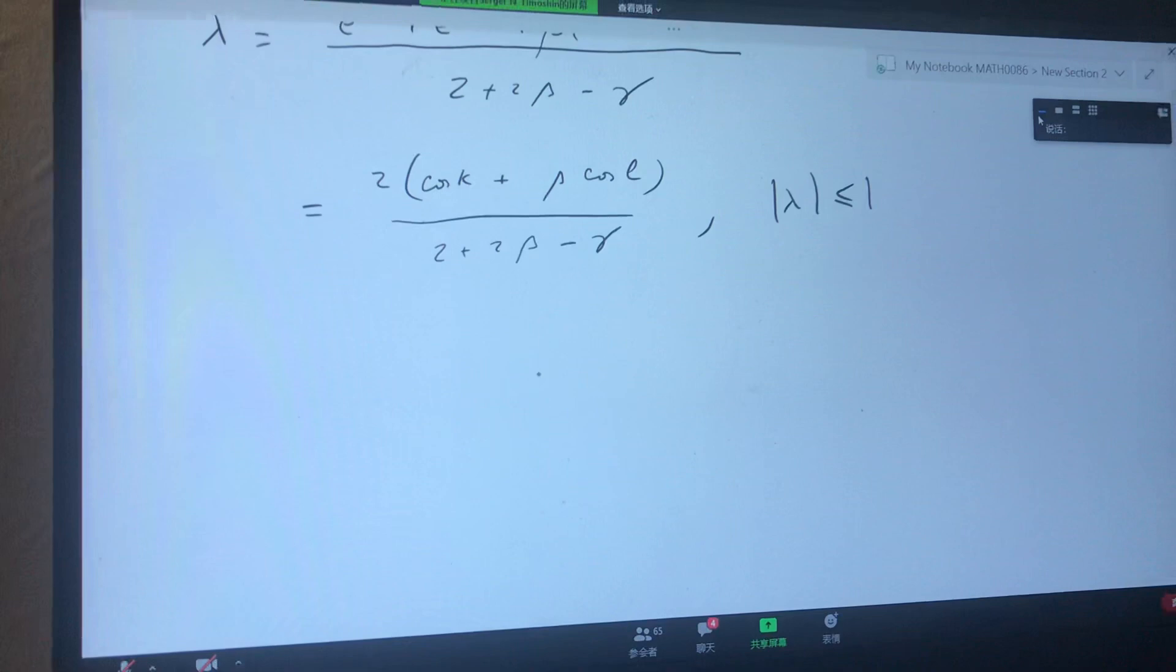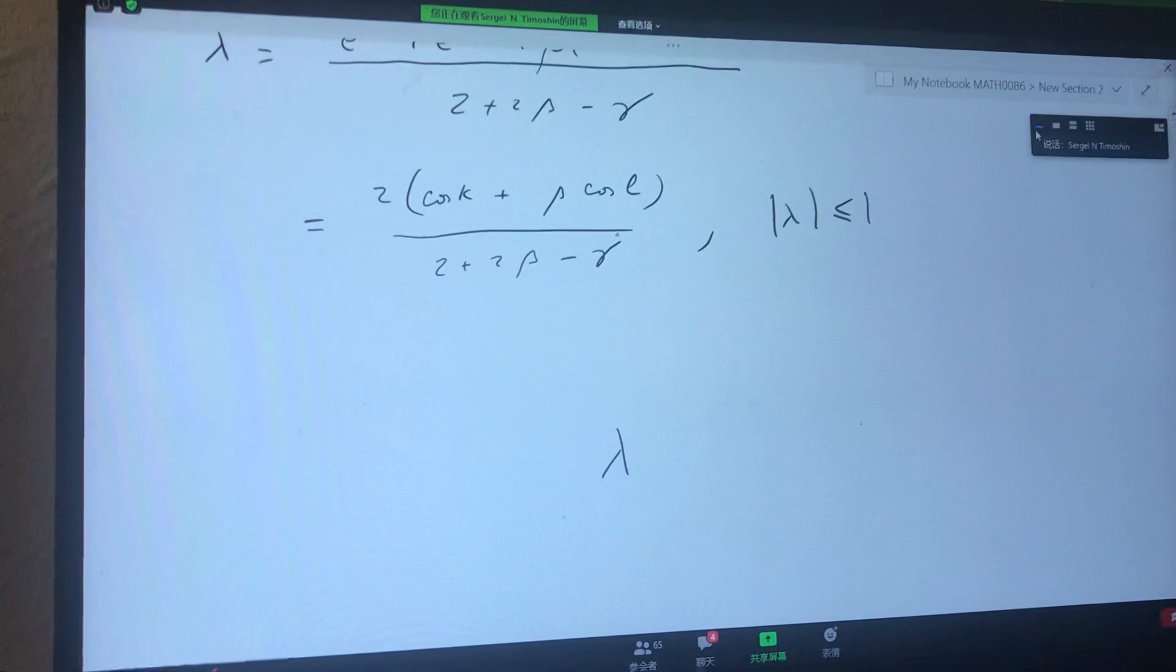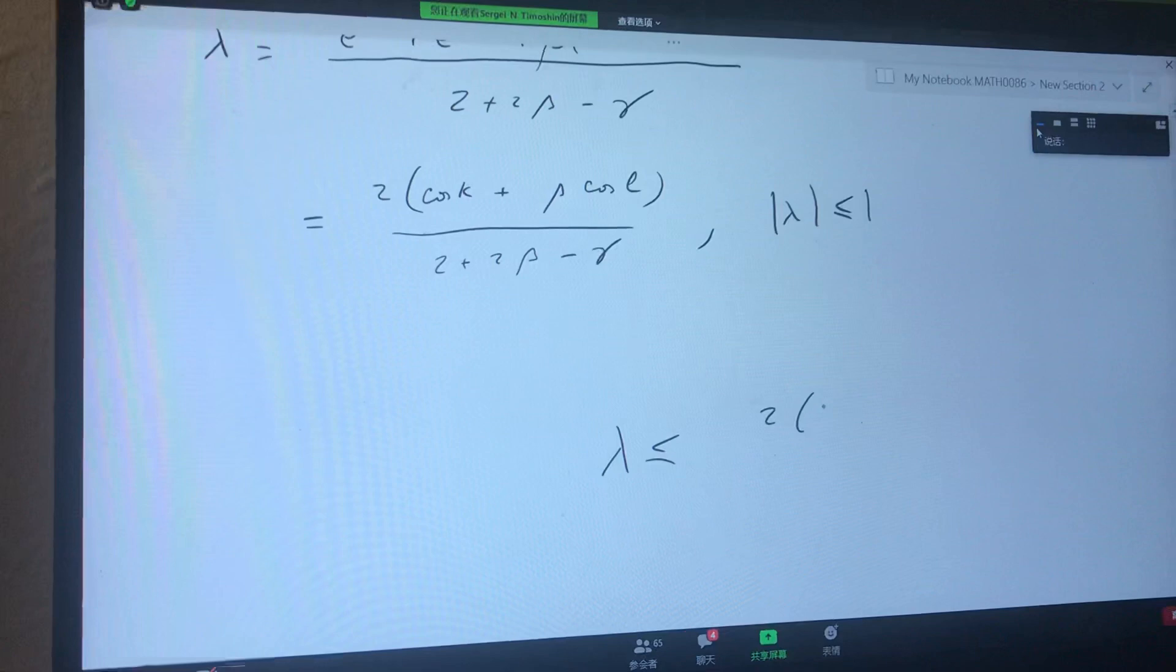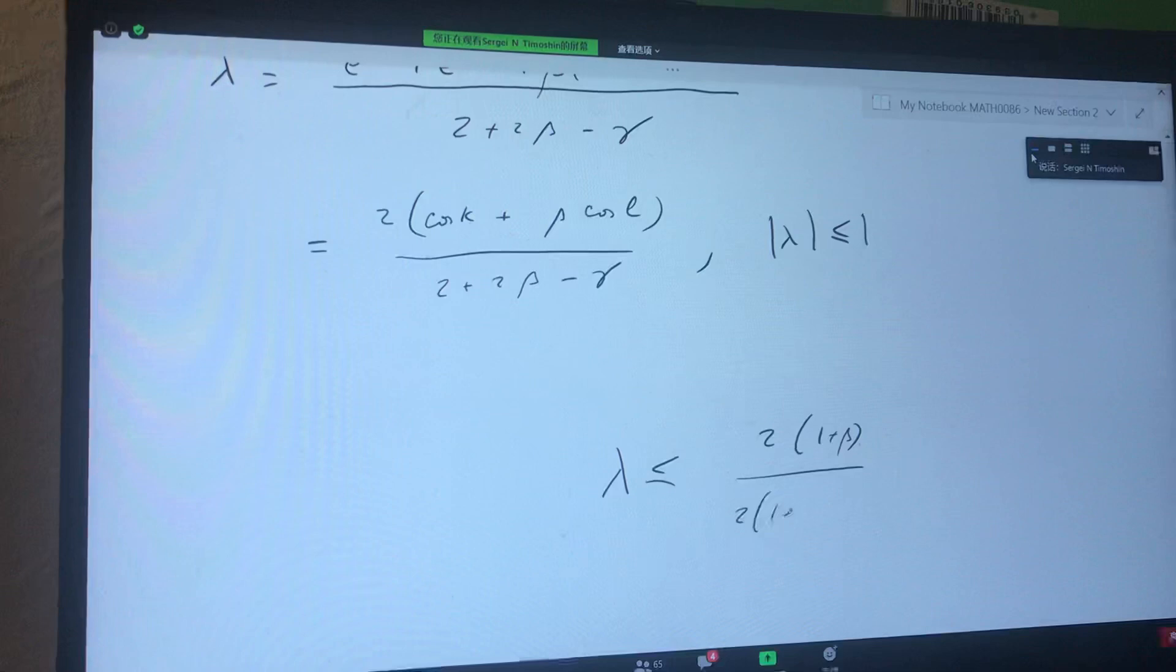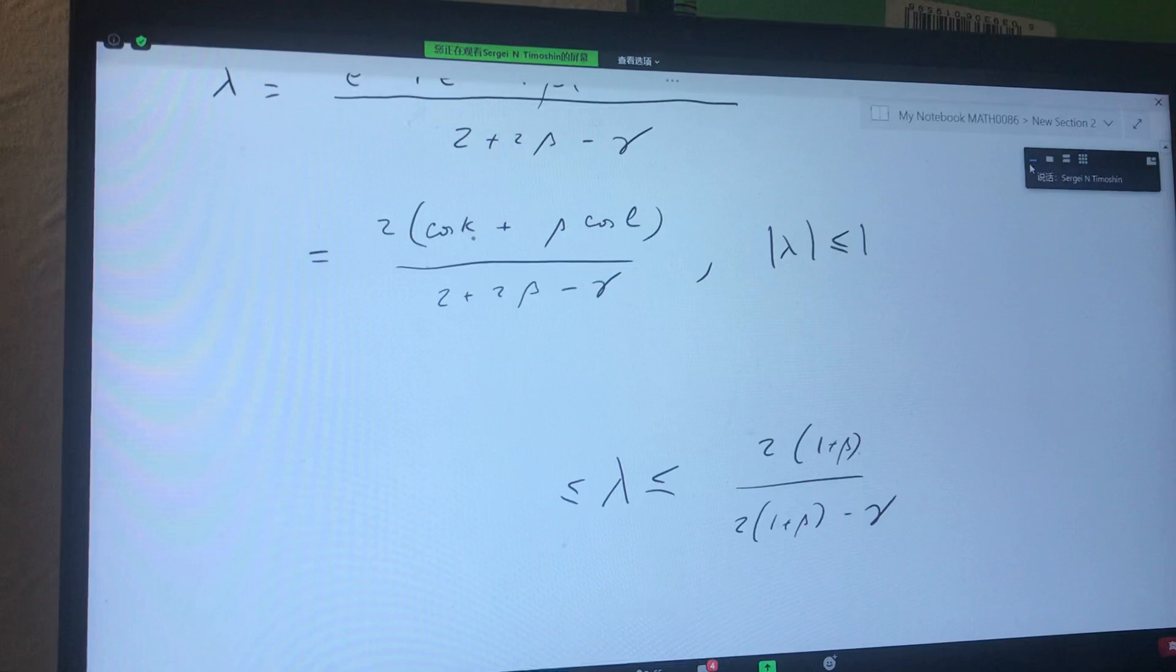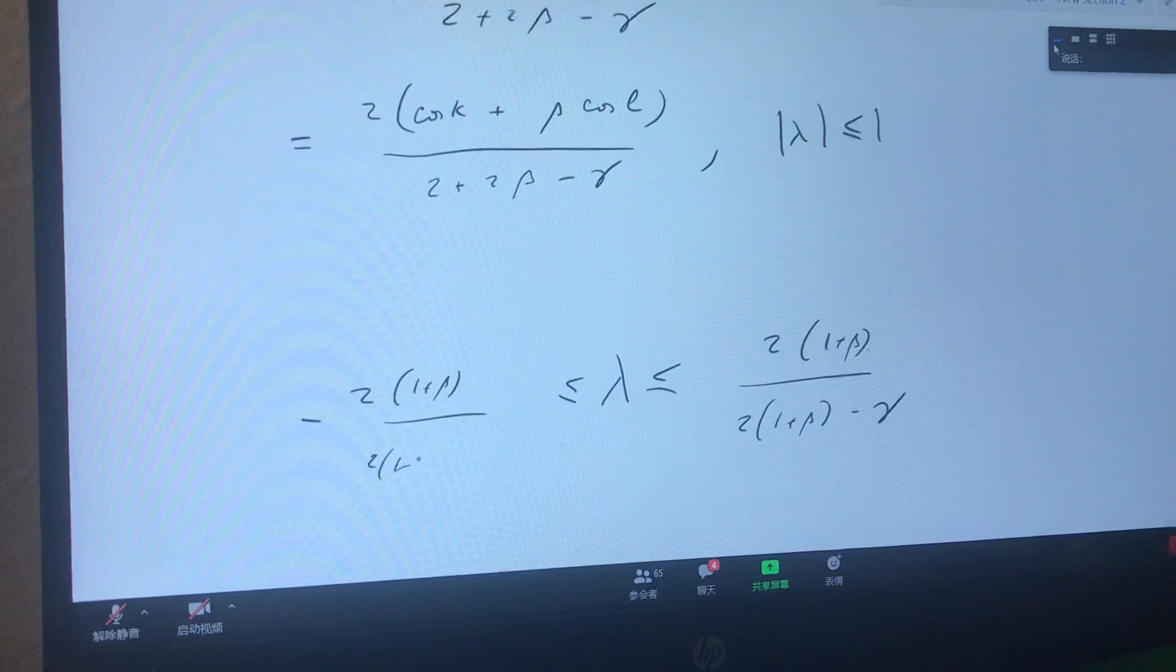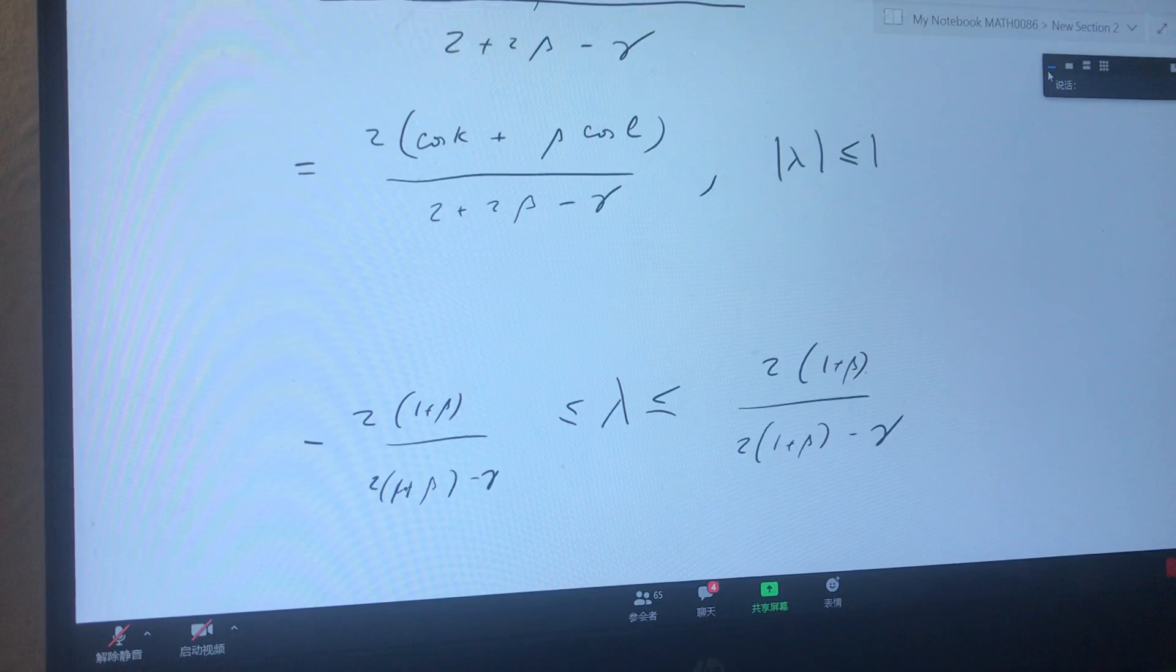Now evaluating this combination, I think it's quite straightforward. The largest value I can pick up here is when both cosines are equal to 1, so it will be less than or equal to 2(1 plus beta). The lowest value is 2(1 plus beta) minus gamma. And the smallest value will be achieved when both cosines are equal to minus 1, so lambda is bounded by this combination: 2(1 plus beta) divided by 2(1 plus beta) minus gamma.